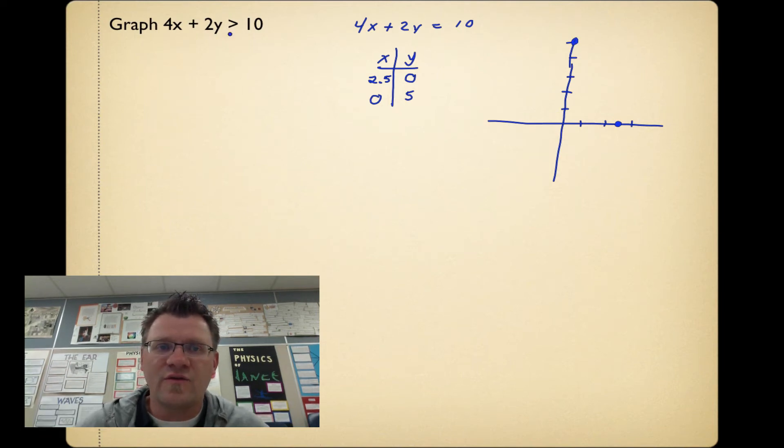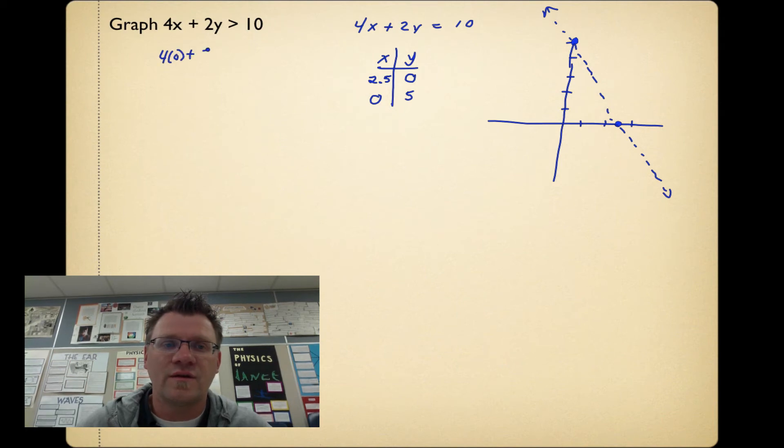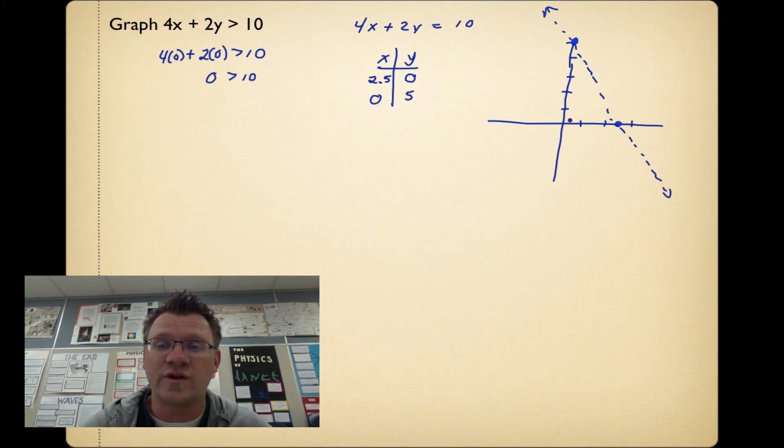This is a greater than sign and it's not an equal to sign, so it's a dotted line that goes through that point and that point. Obviously, you will be using rulers and graph paper, but this is just to give you an idea of what we're going to do. Now we need to choose which way to shade. We're going to choose a test point. The easiest point, which is always the easiest point, is 0, 0 to plug in. So if we plug in a 0, we get 4 times 0 plus 2 times 0 is greater than 10. So is 0 greater than 10? No.